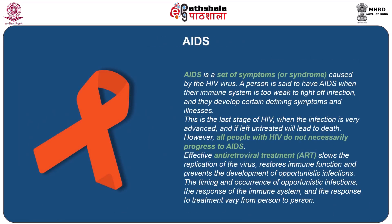AIDS is a set of symptoms or syndrome caused by HIV virus. A person is said to have AIDS when their immune system is too weak to fight off infection and they develop certain defining symptoms and illnesses. This is the last stage of HIV when the infection is very advanced and if left untreated will lead to death. However, all people with HIV do not necessarily progress to AIDS. Effective ART or anti-retroviral treatment slows the replication of virus, restores the immune function and prevents the development of opportunistic infections. The timing and occurrence of opportunistic infections, the response of the immune system and the response of treatment vary from person to person.